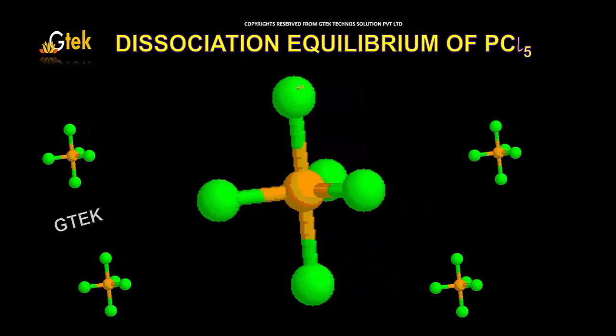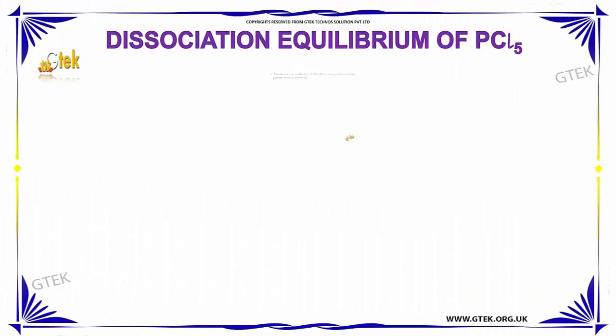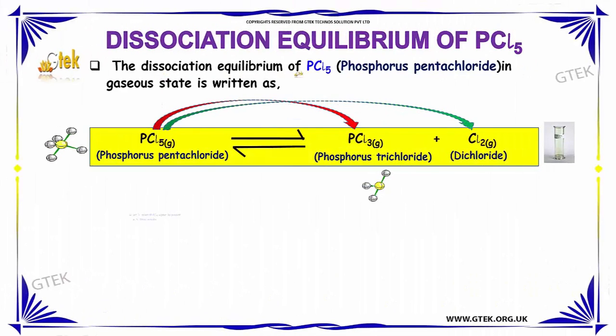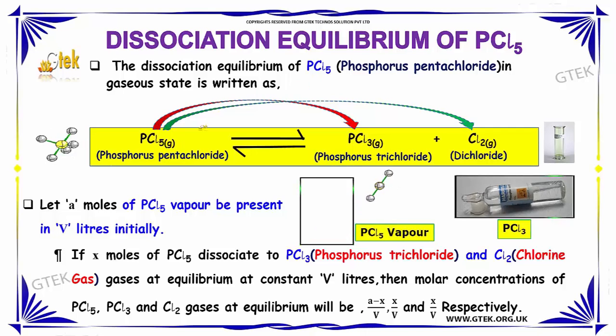Towards the dissociation equilibrium of PCl₅. The dissociation equilibrium of PCl₅ in gaseous state is written here: PCl₅ (Phosphorus pentachloride) gives Phosphorus trichloride and dichloride or chlorine.